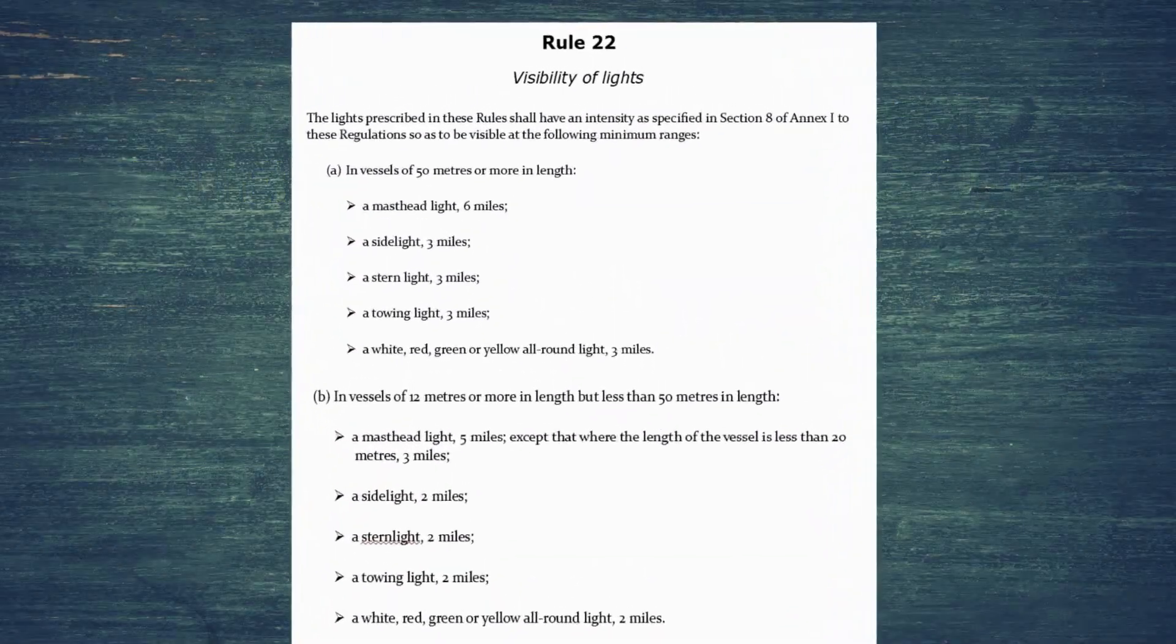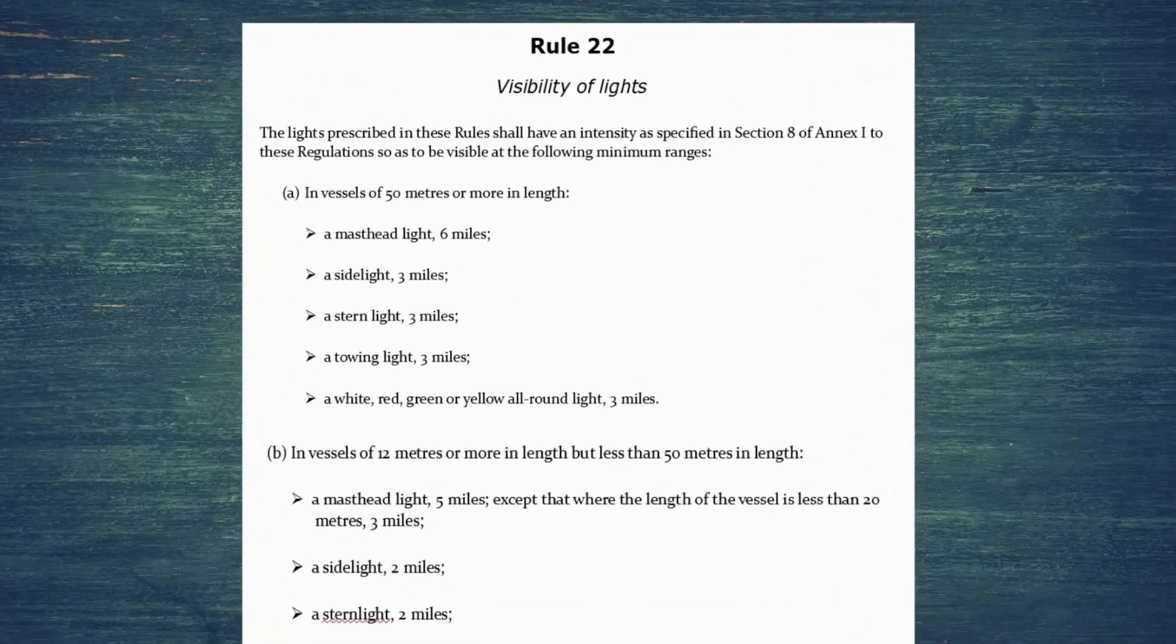Hello and welcome to today's video where we're going to be looking at Rule 22, which is the visibility of lights. We're going to break it down into a simple table and then explore the implications of this rule.